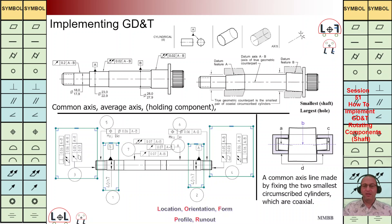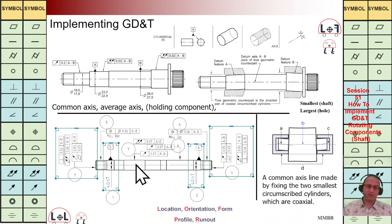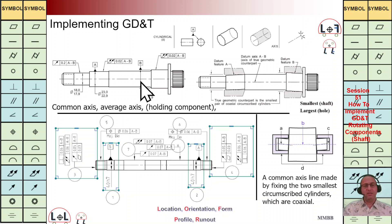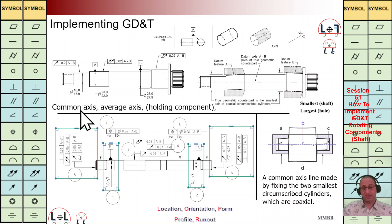Hello everybody, glad to see you today. I'm going to talk about this shaft. As we can see, we have this example shaft, shaft coupling, and another shaft. This shaft on the left hand side is the same as the shaft on the right hand side. Today I'm going to talk in more detail about this shaft and the needed GD&T for this rotating component. This shaft is long enough that we are going to have two axes, A and B. We have used total runout to connect axis A to B — this total runout is 0.02 AB, a common axis, let's say average axis.